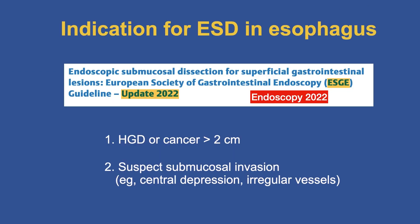What are the indications for ESD in the esophagus? From a publication updated this year by the European Society of Gastrointestinal Endoscopy (ESGE), ESD is indicated for any patient with high-grade dysplasia or cancer larger than 2 centimeters. Second, if you suspect submucosal invasion — for example, central depression or irregular vessels. If the endoscopist is not using ESD for these two groups of patients, they're not following current guidelines.